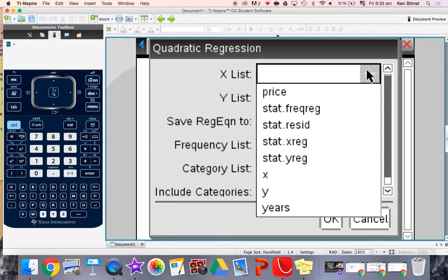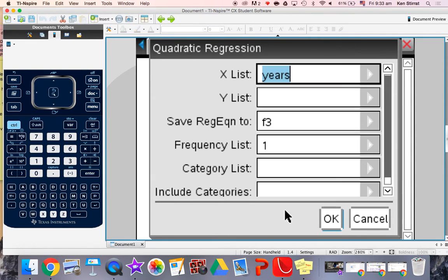The X list now is going to be years. The Y list is going to be price. And look, there it is. We're going to save the equation to F3. So we can have that house price regression equation on a graph page now and then interpret it however we want.